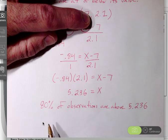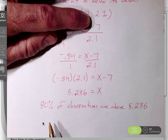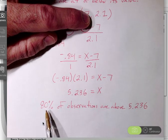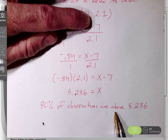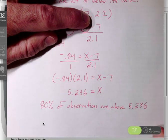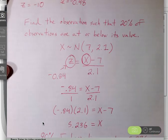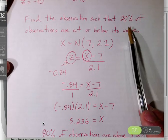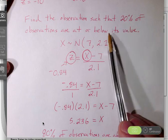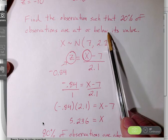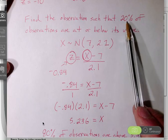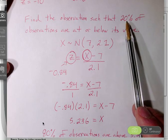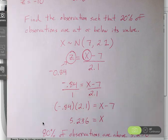The inverse norm command always works with percentiles. So if you want the score such that 80% of observations are above it, then the first thing that you need to think about is that's not phrased in terms of a percentile. You need to rephrase that in terms of a percentile. That means that 20% of observations are at or below its value. The input for the inverse norm command is the percentile. In this case, it was the 0.20. Hope this has been helpful.